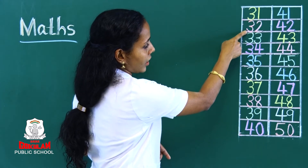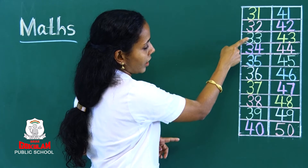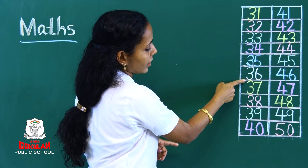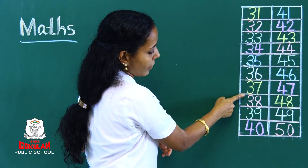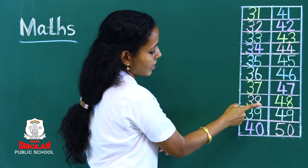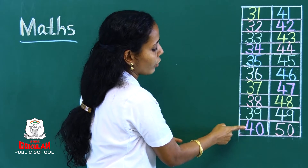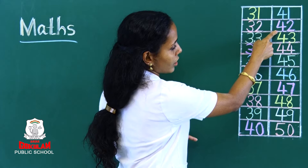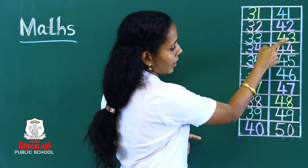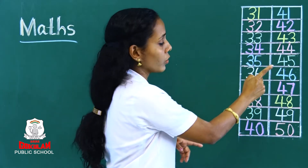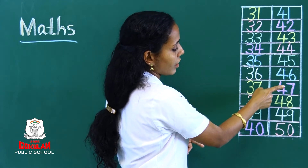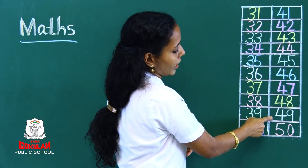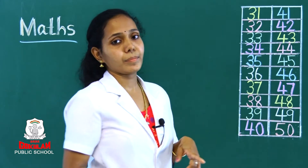Let's count again: 31, 32, 33, 34, 35, 36, 37, 38, 39, 40, 41, 42, 43, 44, 45, 46, 47, 48, 49, 50. Ok.